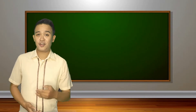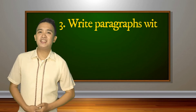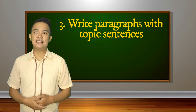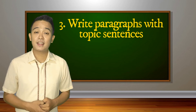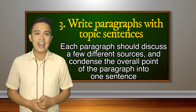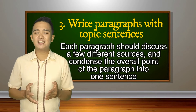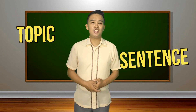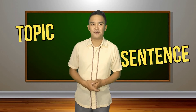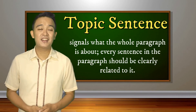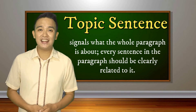Third is writing paragraphs with topic sentences. What sets a synthesis apart from a summary is that it combines various sources. Each paragraph should discuss a few different sources, and you should be able to condense the overall point of the paragraph into one sentence. This is called a topic sentence and it usually appears at the start of the paragraph. The topic sentence signals what the whole paragraph is about, and every sentence in the paragraph should be clearly related to it.